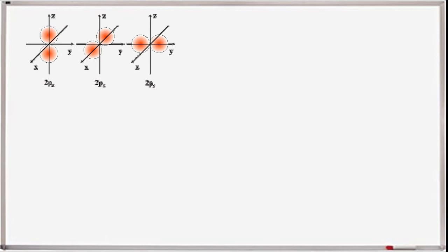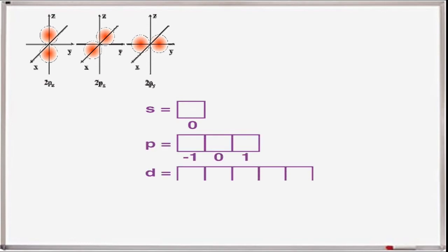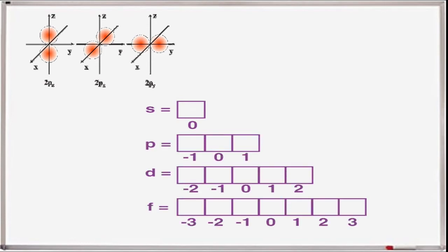The magnetic quantum number describes the orientation of orbitals. For example, the p subshell has three orientations: 2px, 2py, and 2pz. The s subshell has 1 atomic orbital (m=0); p has 3 atomic orbitals (m = −1, 0, +1); d has 5 atomic orbitals (m = −2, −1, 0, +1, +2); and f has 7 atomic orbitals (m = −3, −2, −1, 0, +1, +2, +3).